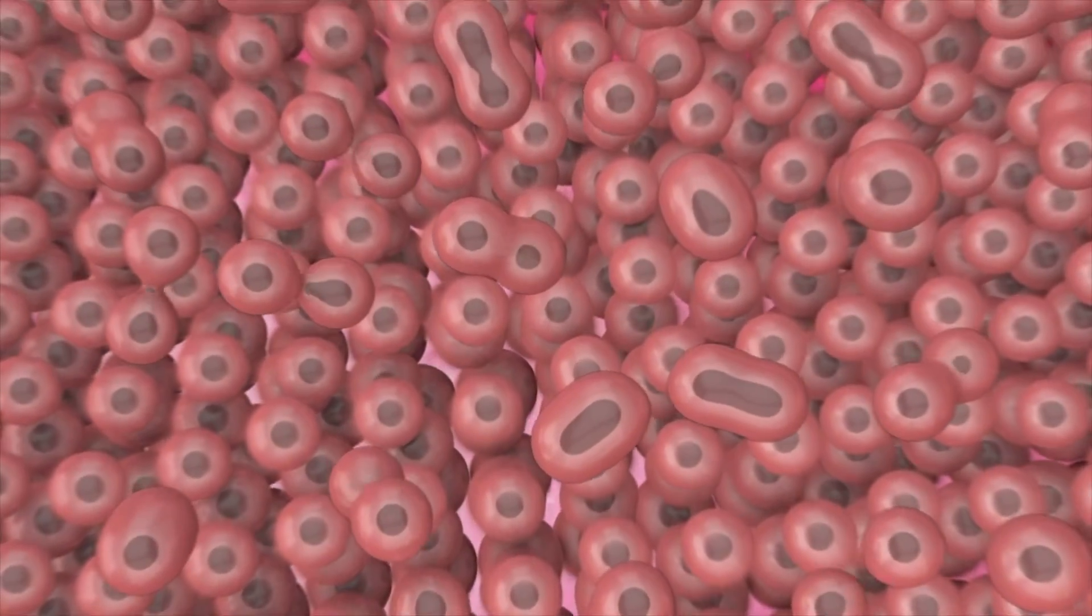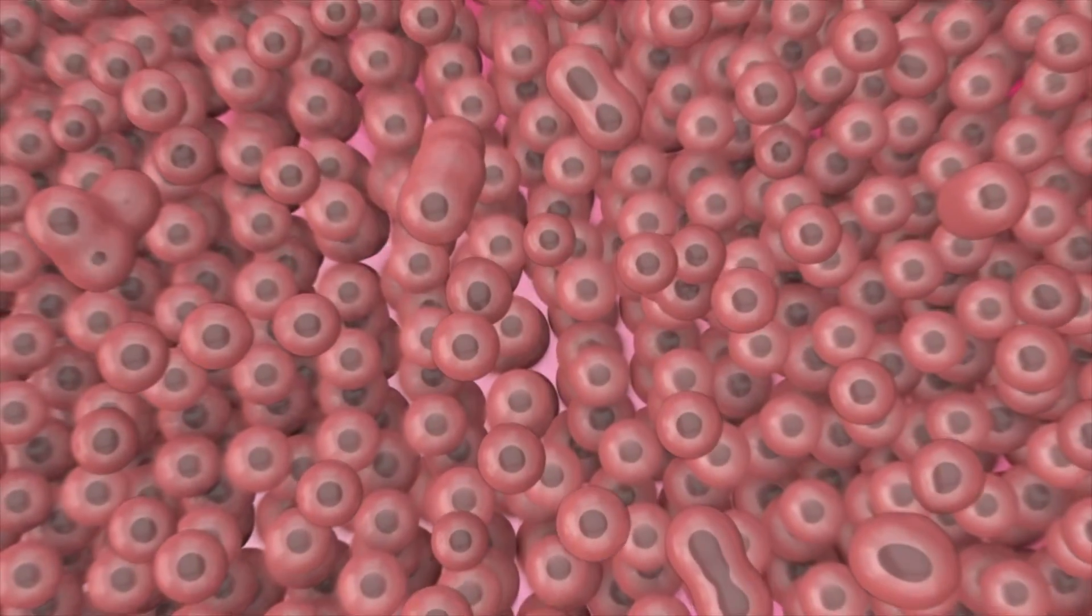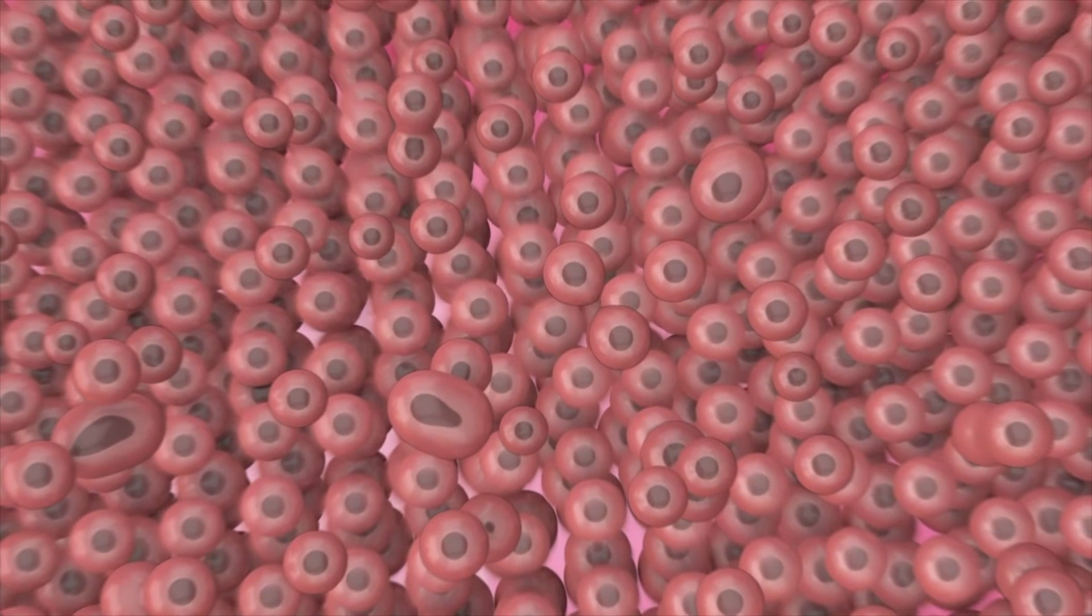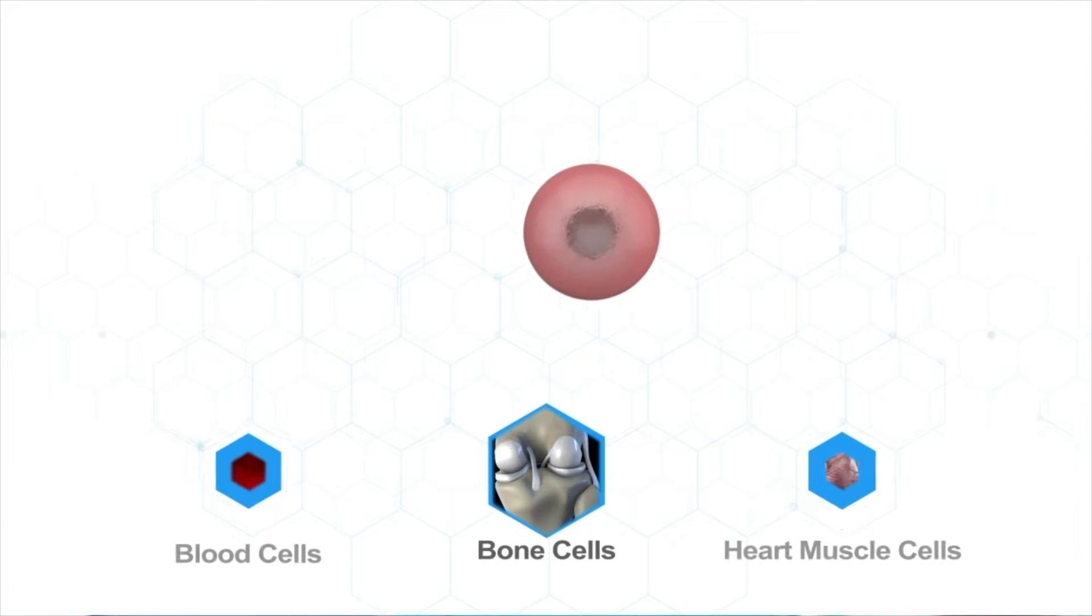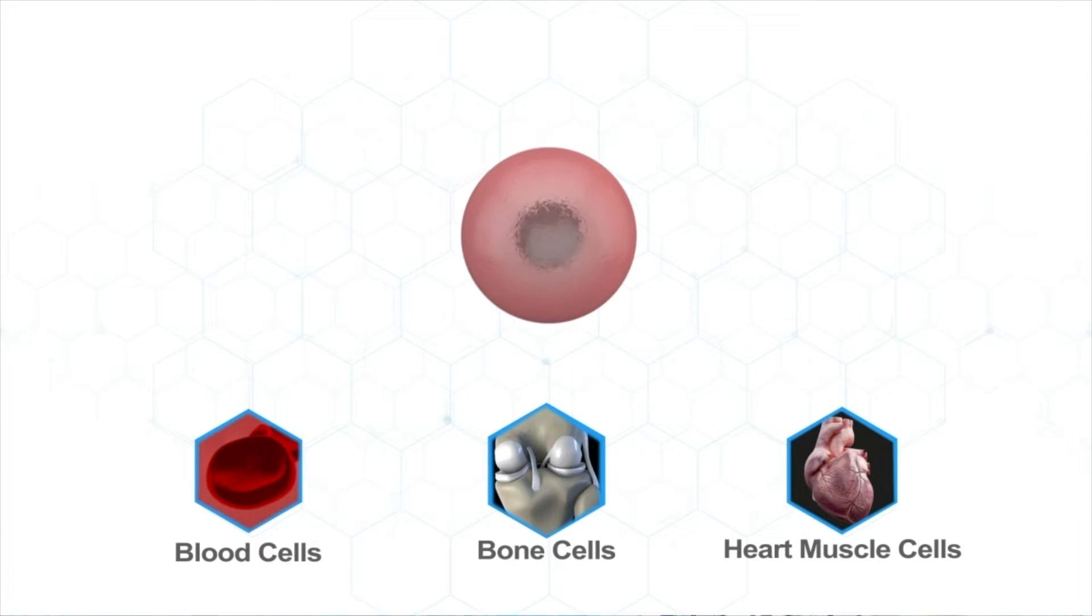Some stem cells simply divide into other stem cells. Meanwhile, others are used to differentiate, meaning they change from a stem cell to a specific type of cell needed by the body, such as blood cells, bone cells, or heart muscle cells.